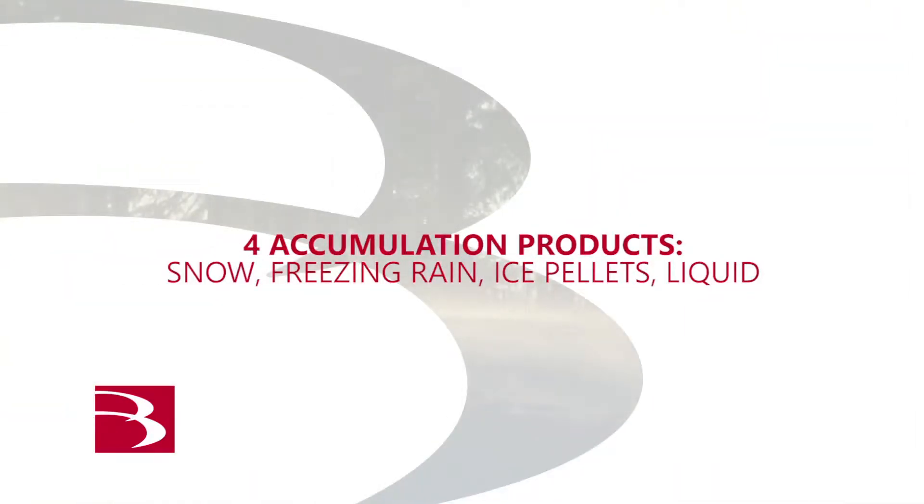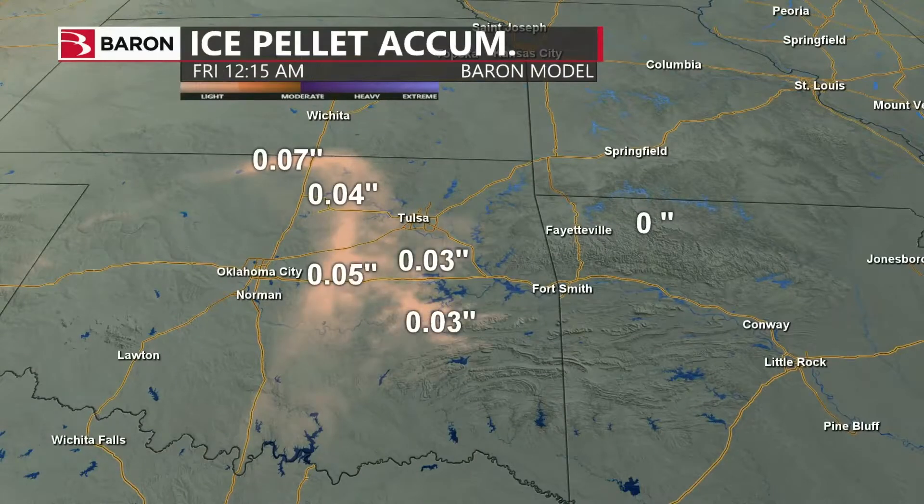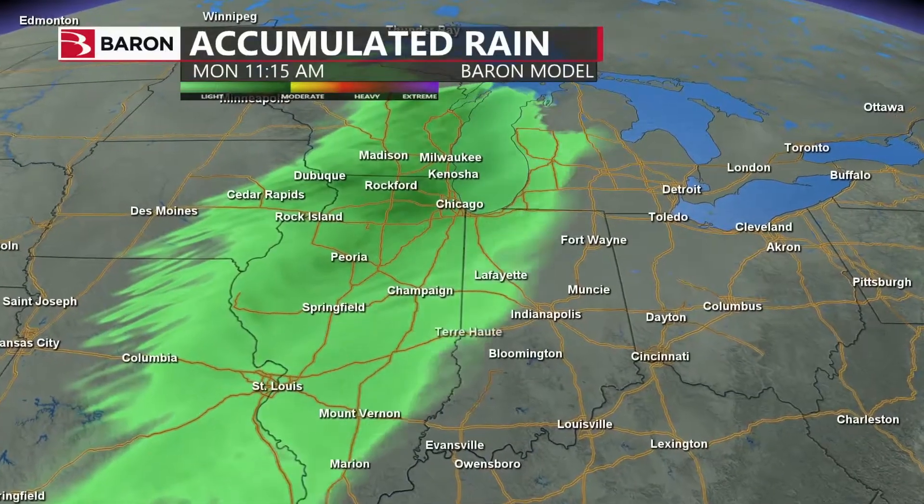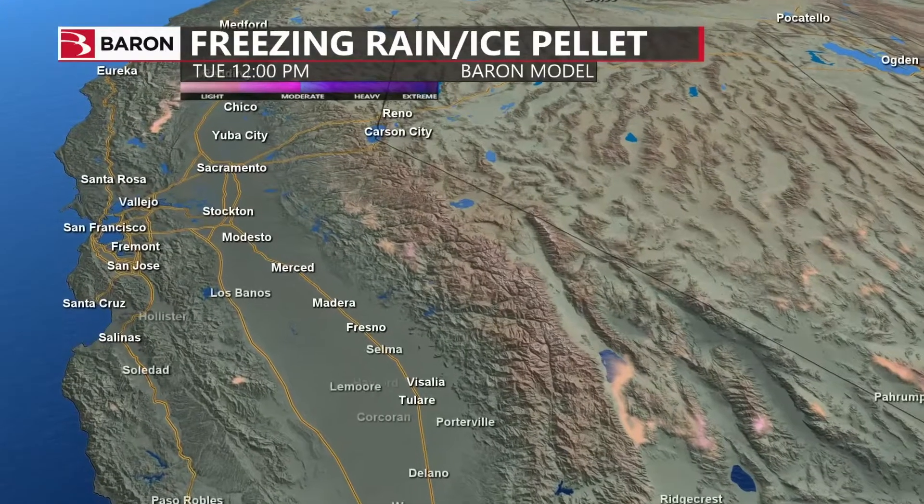Moving from reflectivity to accumulation, we're changing things up with this new model. In the past we provided three types: snow, mixed precipitation, and liquid rainfall accumulation. Today we provide four discrete accumulation products: snowfall remains the same, then we have freezing rain, ice pellet accumulation, and liquid rainfall. We also provide a fifth type — total accumulation — which converts snowfall, freezing rain, and ice pellets all to liquid equivalent.